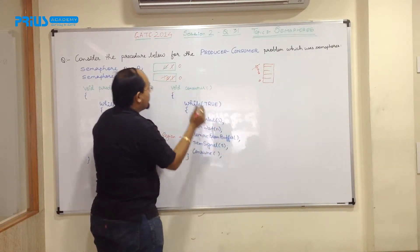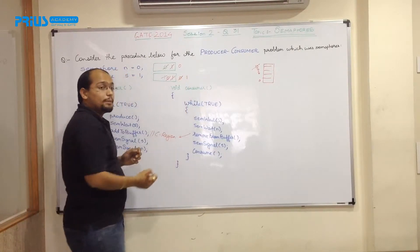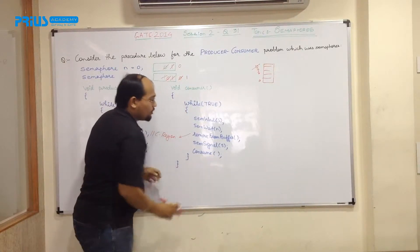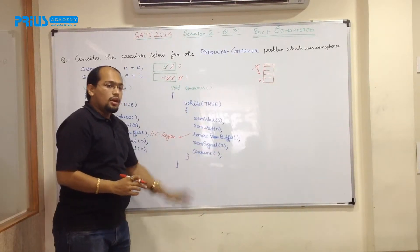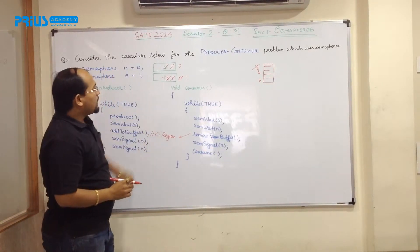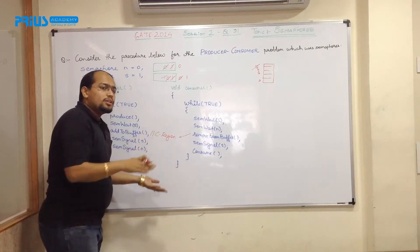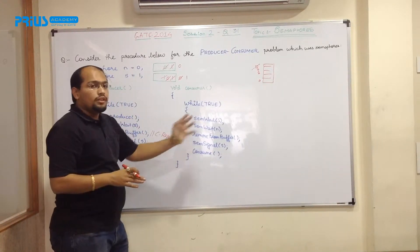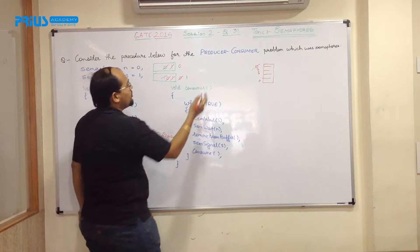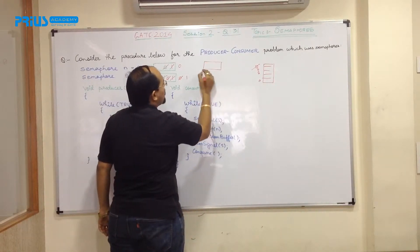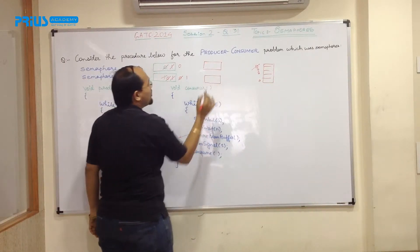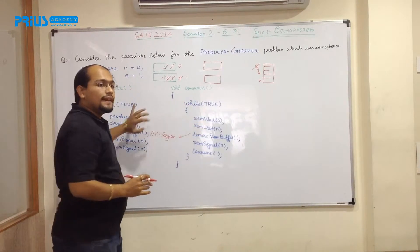Then once that is consumed, semaphore signal S. That means this will be incremented by 1 and consumed. That means now the consumer can consume the thing. So looking at this, what it means that if I am taking producer first and then consumer, it thinks of ideal situation where after producing, consumer is consuming.